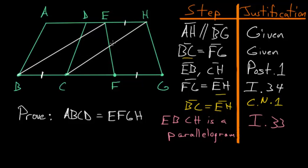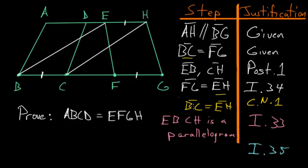Now that we know EBCH is a parallelogram, and we also know that it shares the same base as the parallelogram ABCD, and they both end on the same parallel, we know due to Book 1, Proposition 35 that these two parallelograms are equal to each other. So ABCD is equal to the parallelogram EBCH.